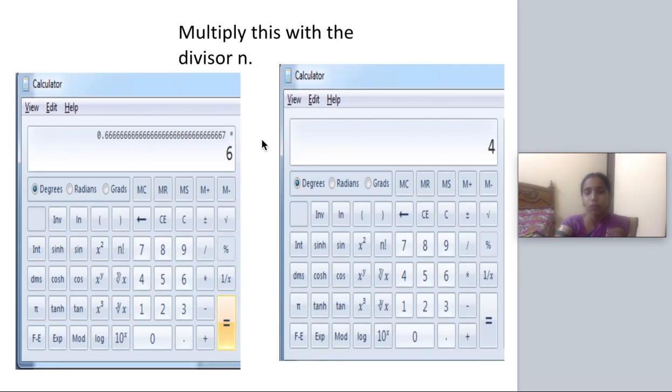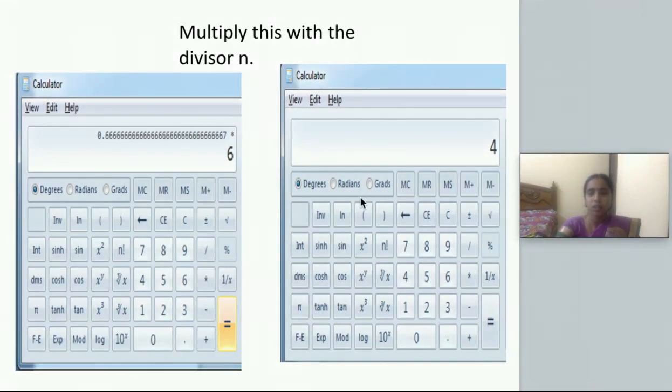The next step is to again multiply. I have to multiply by the divisor. Here our divisor is 6, so I'm multiplying by 6. I got 4. So we all know that 100 mod 6 is 4, and we got the same answer.